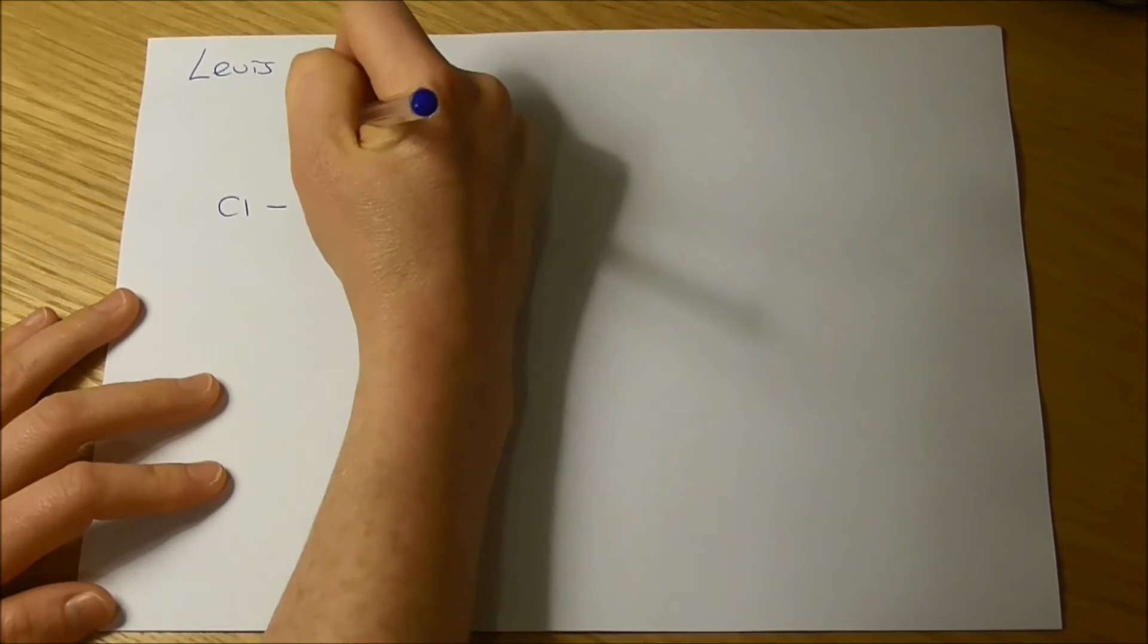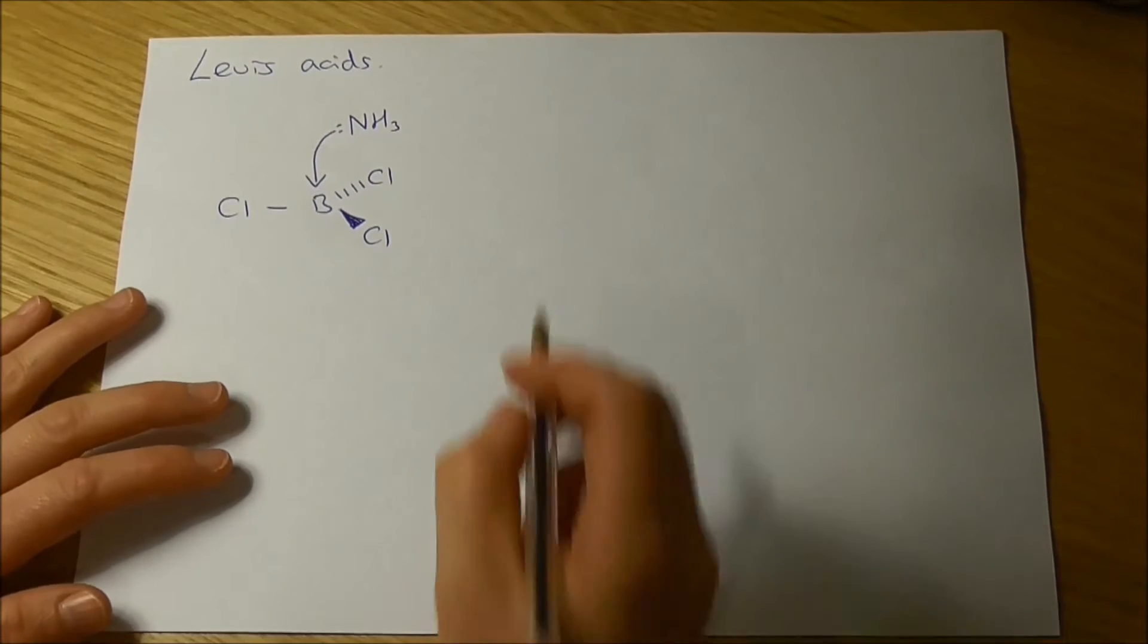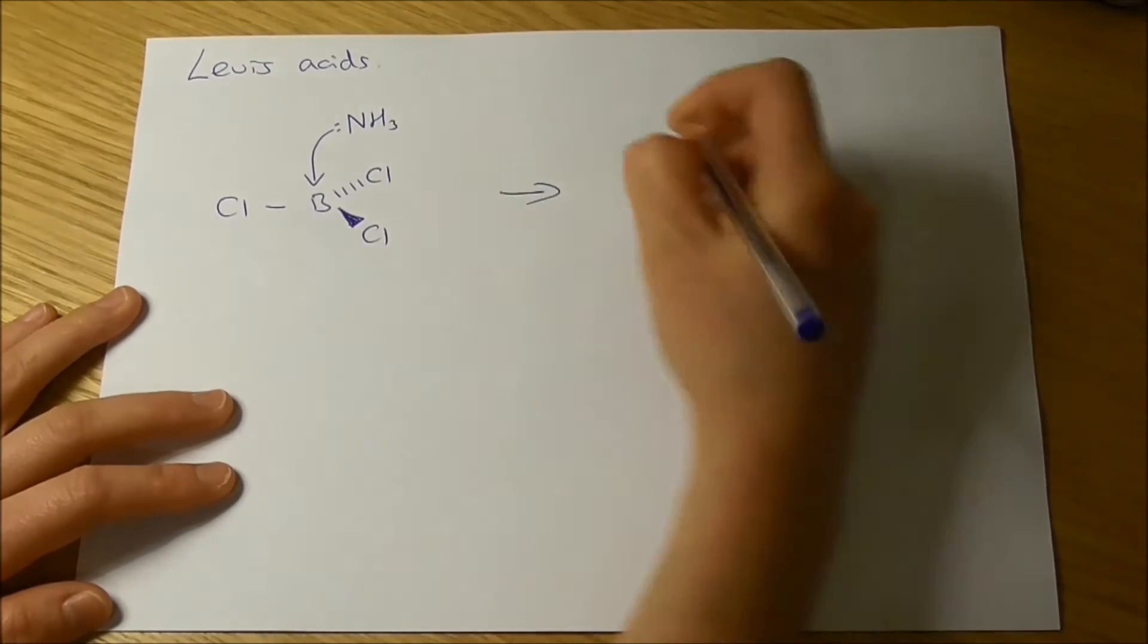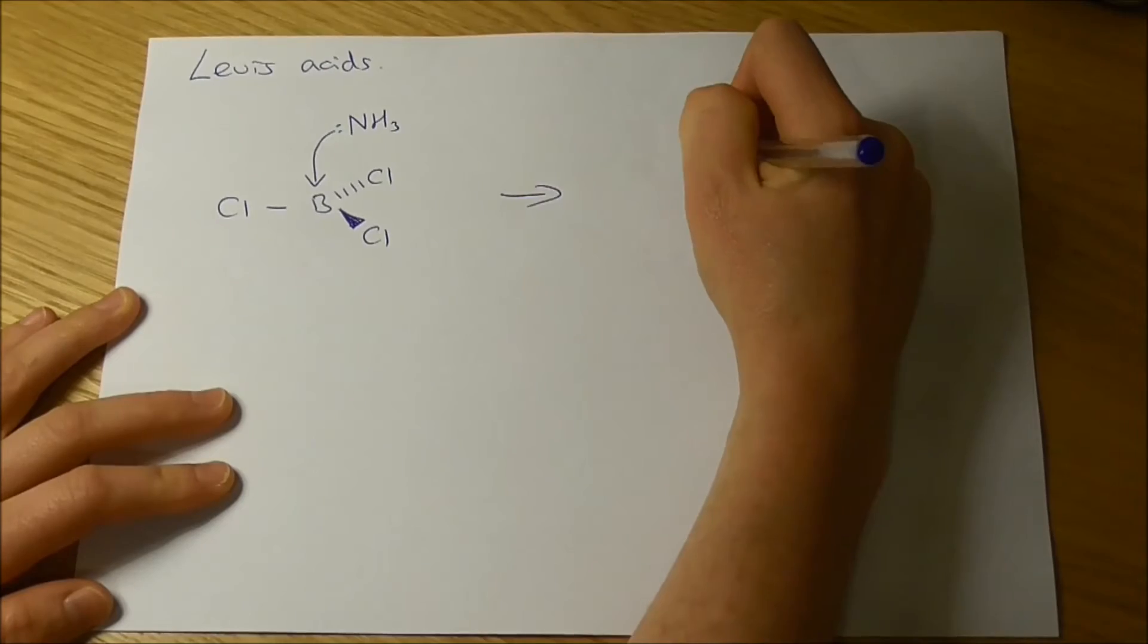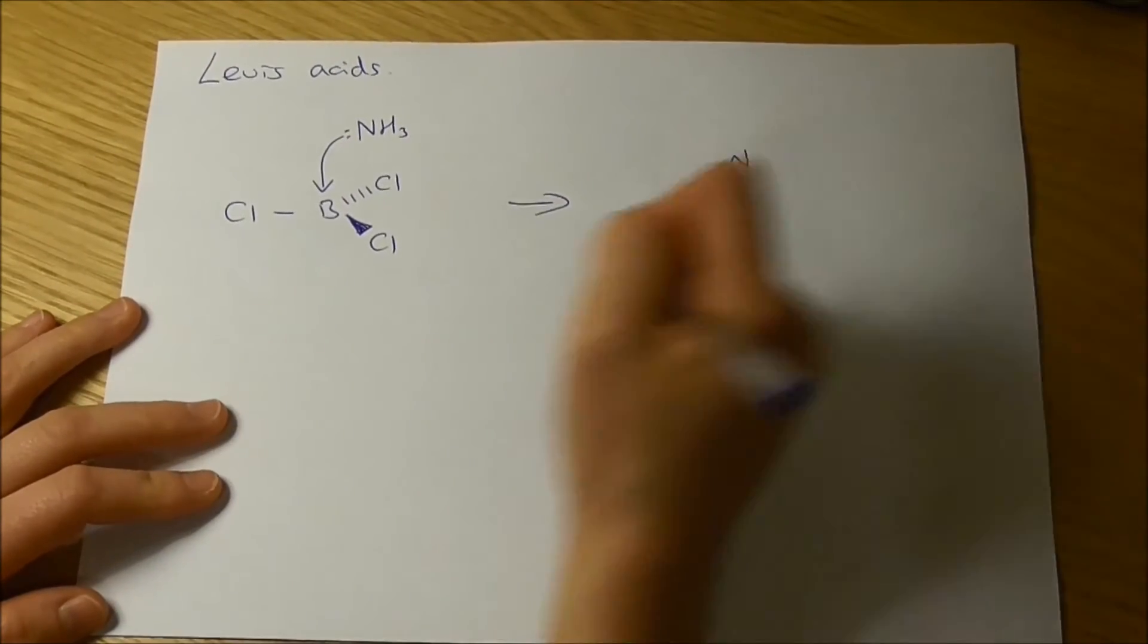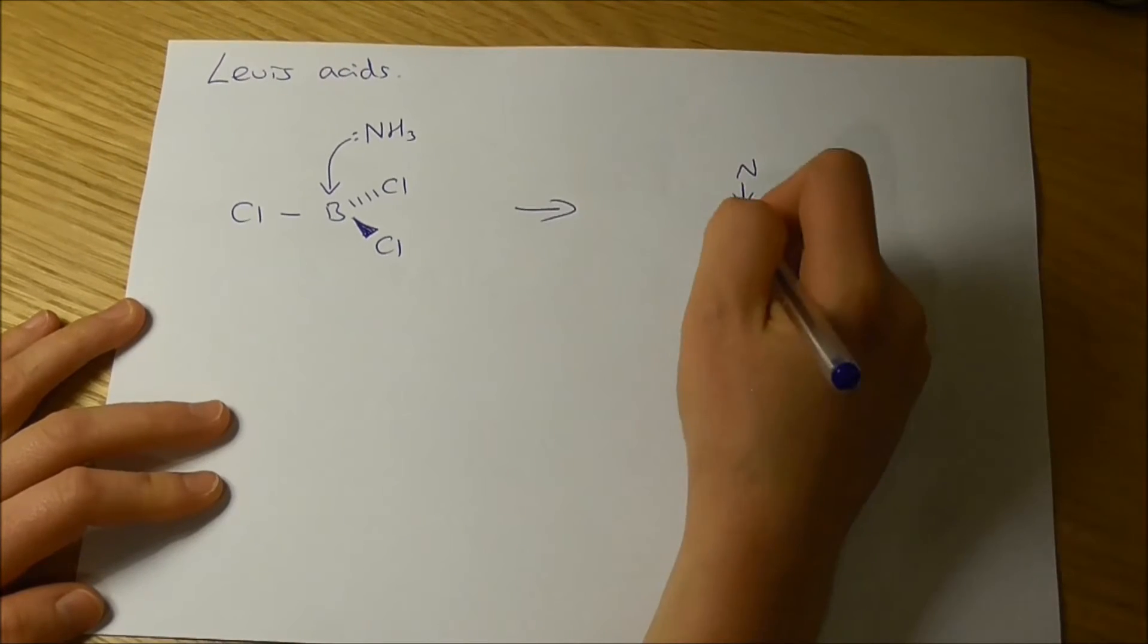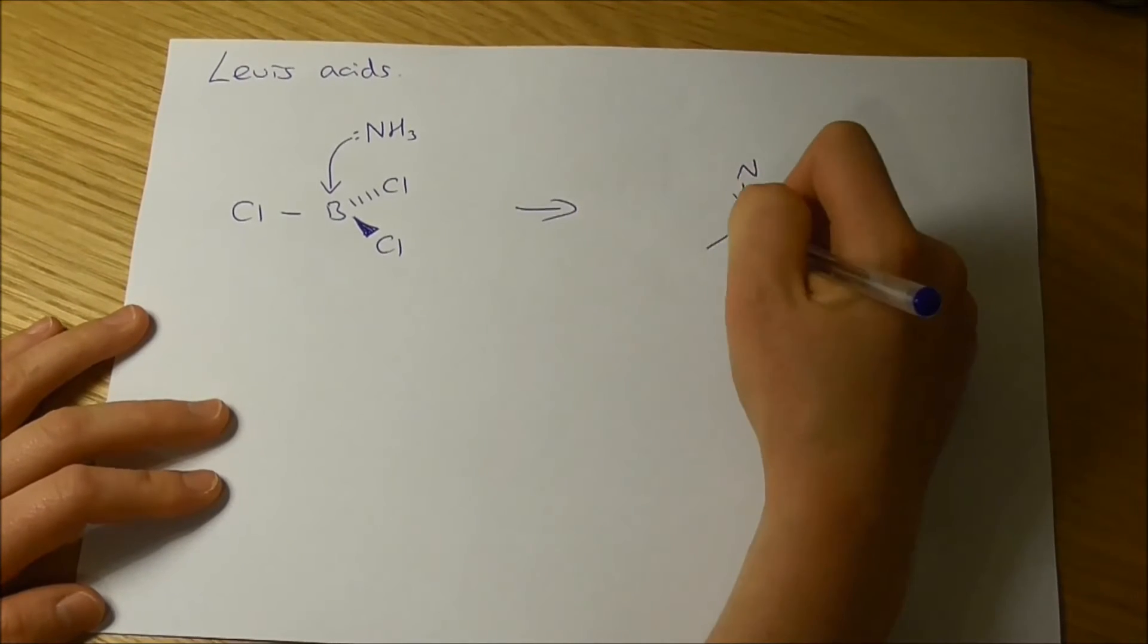And so species with a lone pair of electrons can come and donate that lone pair of electrons into the boron, and what you then get is a dative covalent bond between this species and the boron. So in this case it's the ammonia, the lone pair on the ammonia is forming a dative covalent bond with the boron.